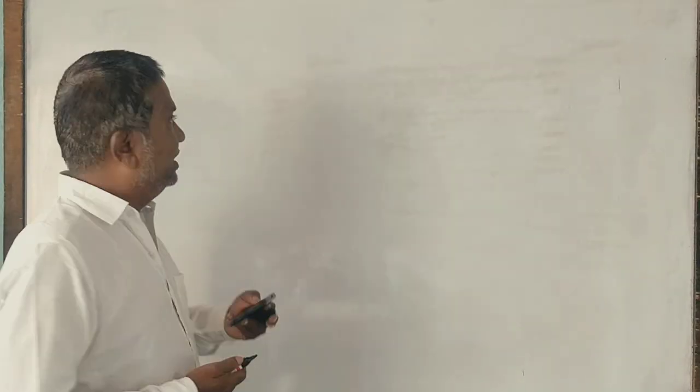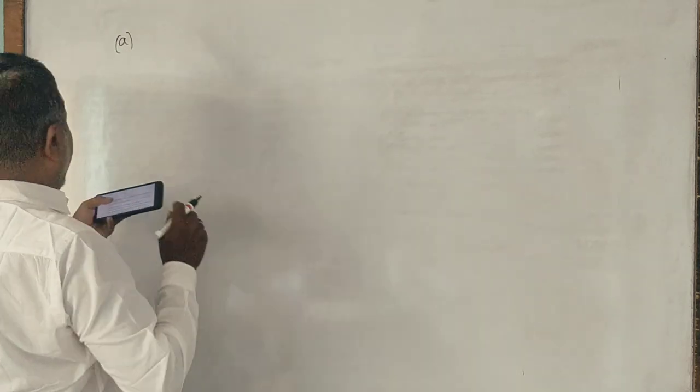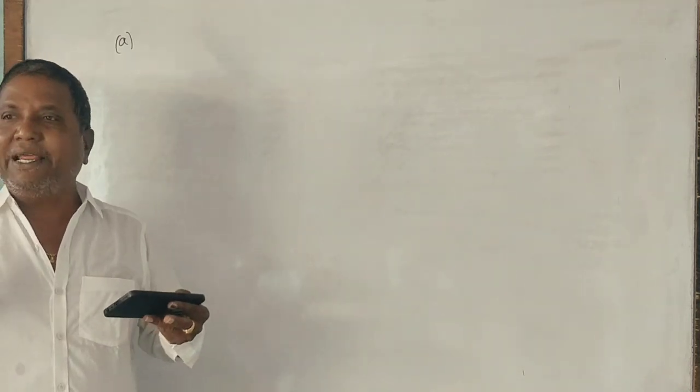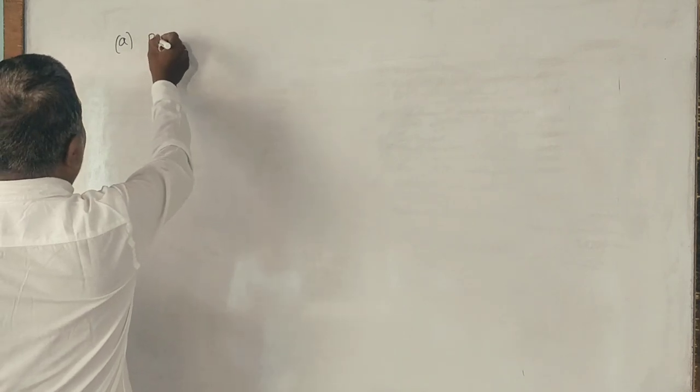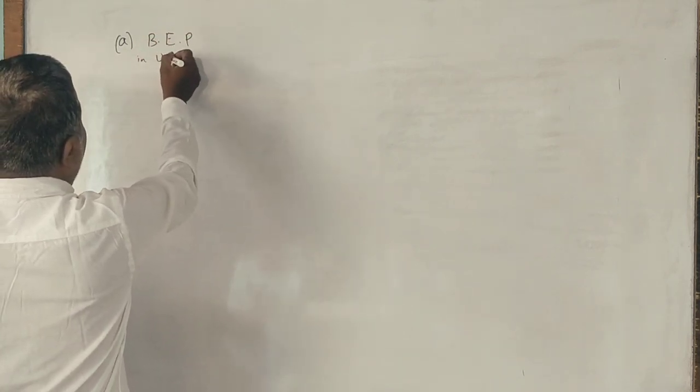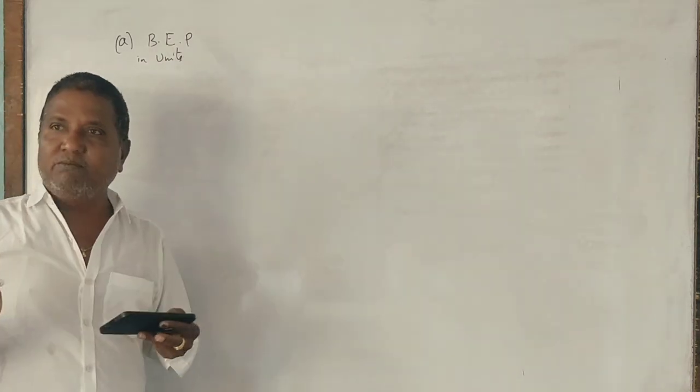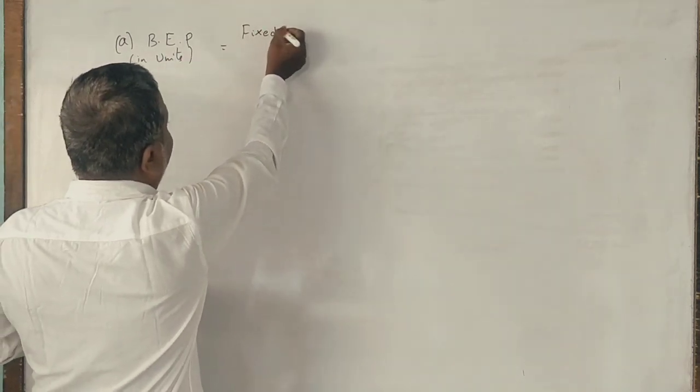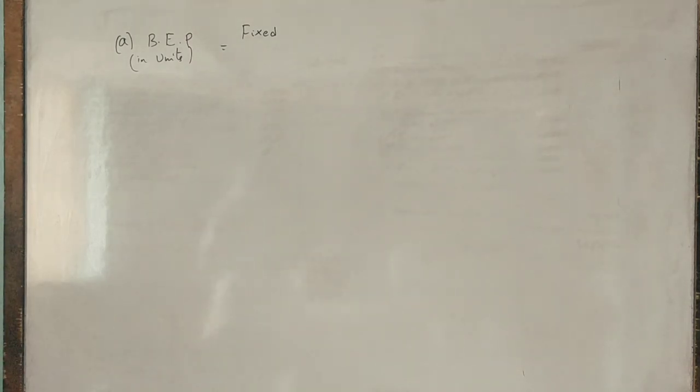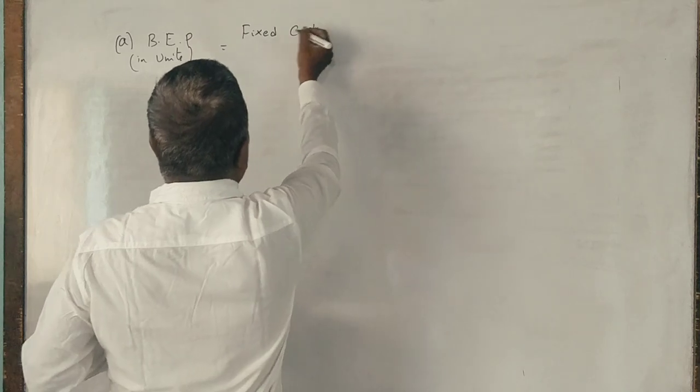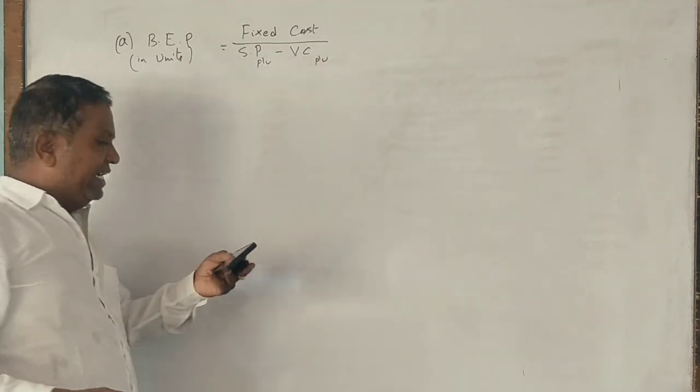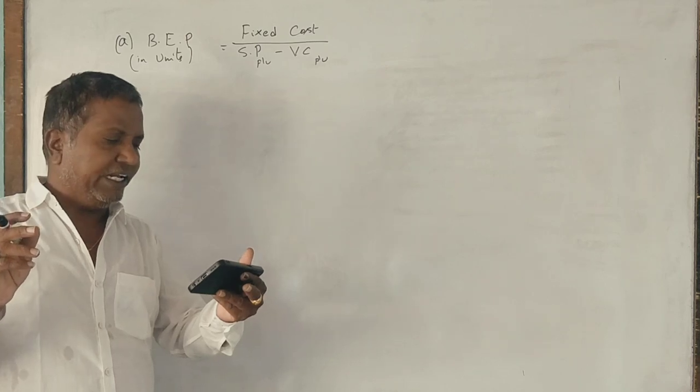Break even point formula: Fixed cost divided by selling price minus variable cost per unit. Selling price per unit is 230 rupees.